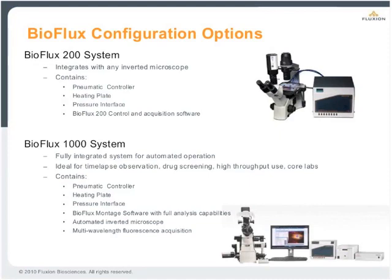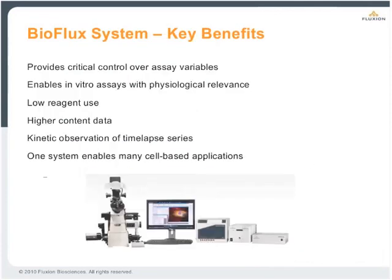That concludes our discussion of applications. There are two product offerings for BioFlux. The BioFlux 200 system consists of the controller, software, and accessories — everything you need to run your assays if you have your own inverted microscope. The BioFlux 1000 is a fully automated and integrated system that includes an automated image capture workstation and the hardware and software needed to run walk-away automation as well as automated analysis. Hopefully today you've learned about the BioFlux, how it provides control over many important aspects of your live cell assays, including both physiological parameters and dynamic data capture, using one system to perform many types of assays.